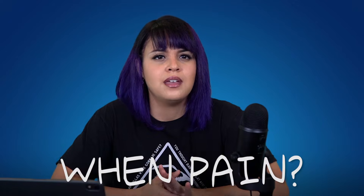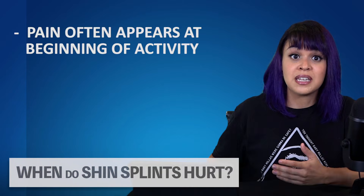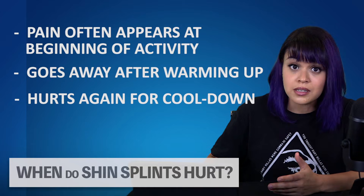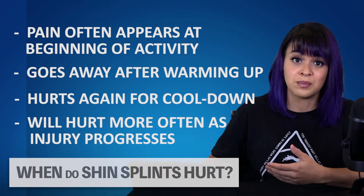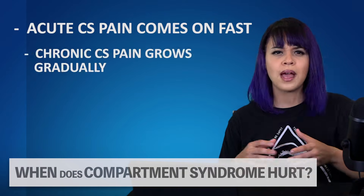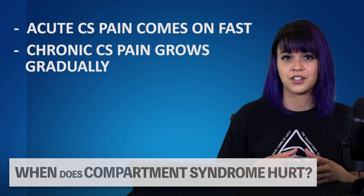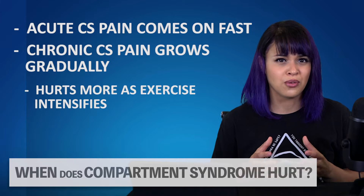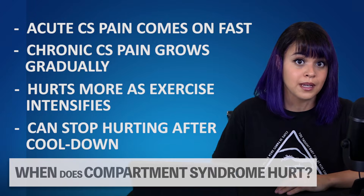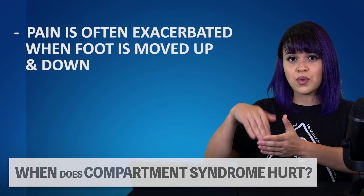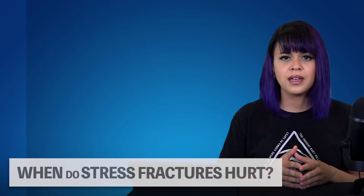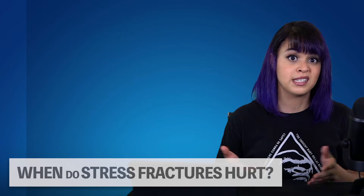When do you feel it? In the early stages of shin splints, pain often appears at the beginning of an activity, disappears during the heat of the exercise, then returns again when you're cooling down — hurting more often as the shin splints progress. Compartment syndrome pain can come on really fast in the case of acute compartment syndrome, or build up gradually over time as the muscle grows too fast for the fascia. When training, compartment syndrome pain will progressively worsen as you exercise, then usually hurt less or stop hurting around 15 minutes after stopping. The pain is often exacerbated when you stretch the muscle by pulling your foot downwards or upwards. Similarly, with stress fractures, warming up won't make the pain go away — in fact, the opposite generally occurs.